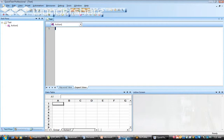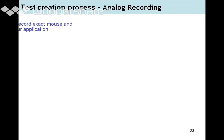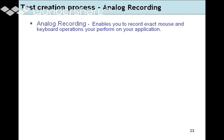Analog recording mode enables you to record the exact mouse and keyboard operations you perform on your application. In context sensitive mode, mouse movements and keyboard actions are not captured. If you want mouse movements to be tracked, you should use the analog recording mode.